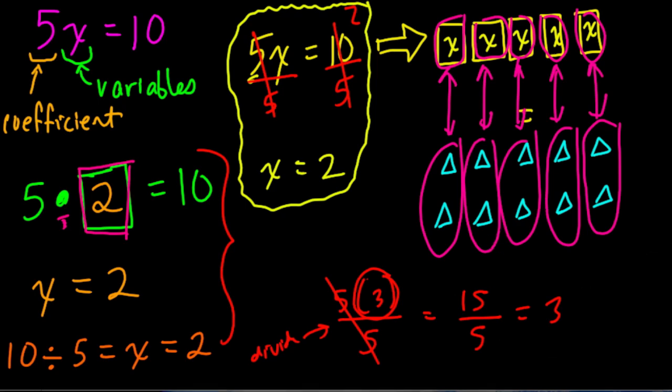So let's backtrack. Here, with the equation 5 times something is 10, we can solve by using inverse operations. So we can divide 10 by 5 to get x. And that's what we did right here. And that works.